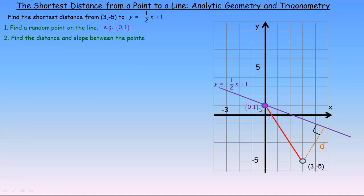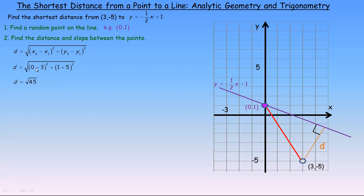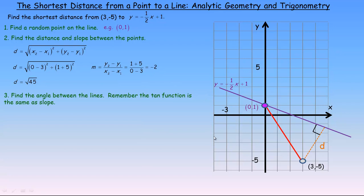Next, we find the distance and slope of the segment joining (0, 1) to (3, -5). Using the distance formula: √[(0-3)² + (1-(-5))²] = √[9 + 36] = √45. For the slope: (1-(-5)) / (0-3) = 6 / -3 = -2. So the length of that segment is √45 and its slope is -2.